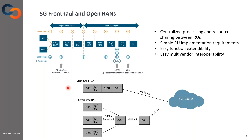Because of this split option, the base station is divided into a radio unit implementing lower physical functions and a distributed unit implementing higher physical functions, with the O-RAN fronthaul as the interface between the radio unit and the distributed unit.